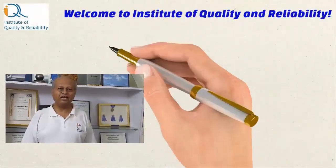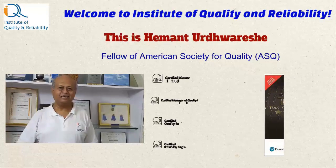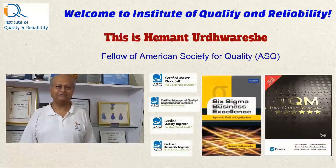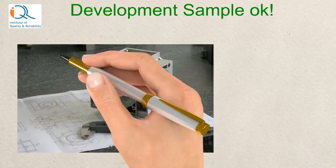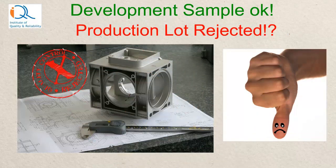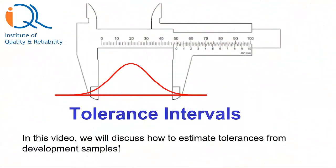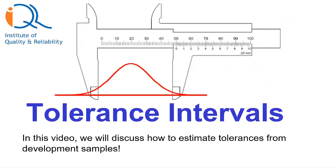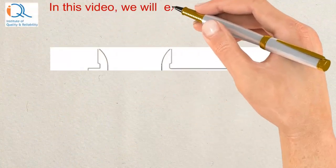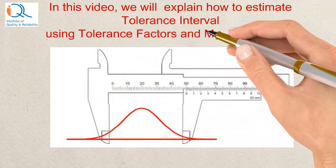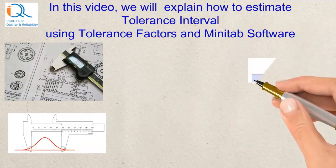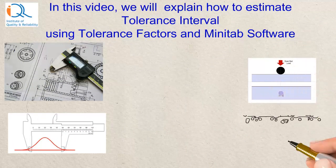Welcome to Institute of Quality and Reliability. Hi, this is Hemant. Have you come across a situation when your development sample was good but the production lot got rejected? One of the reasons why this happens is incorrect tolerances when we design parts. In this video, we will explain how to estimate tolerance intervals using tolerance factors and also using Minitab software.